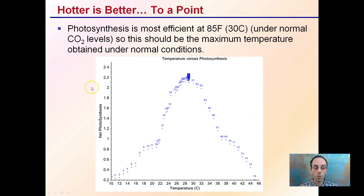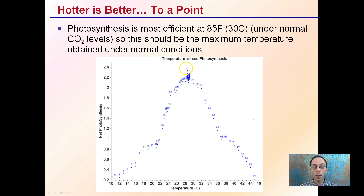So here we have net photosynthesis, here we have temperature, and we can see it increases to a point, but then as the temperature increases, the actual net photosynthesis will decrease. So it's important to try to stay as close to this range as possible to maximize plant efficiency.